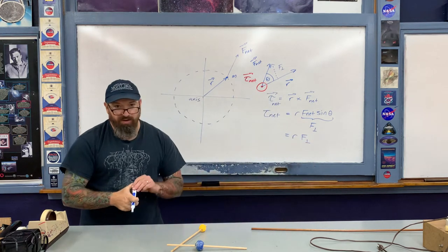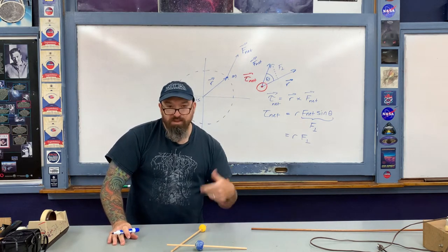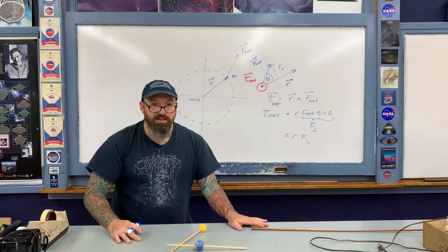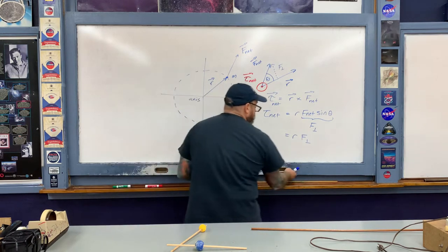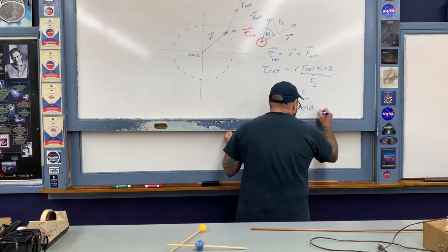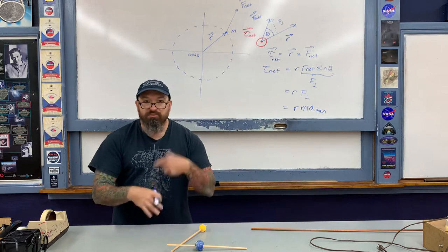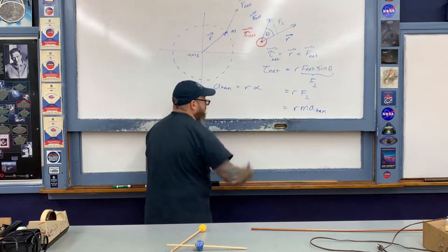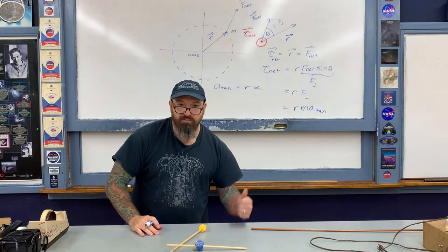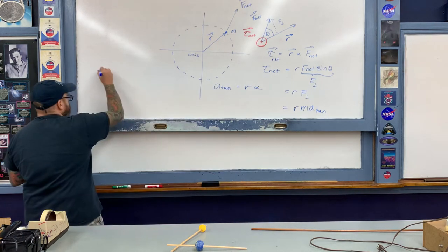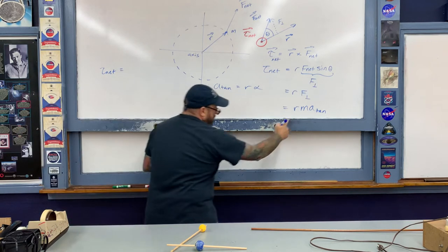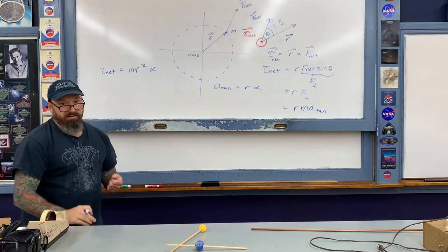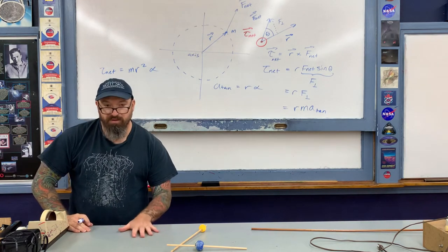The net torque is therefore r times F_perpendicular. F_perpendicular is a component of the net force equal to mass m multiplied by the tangential acceleration, so we write F_perpendicular equals m·a_tangential. Rewriting in terms of rotational quantities: the tangential acceleration equals r times alpha (the angular acceleration), so the net torque becomes r times m times r times alpha.